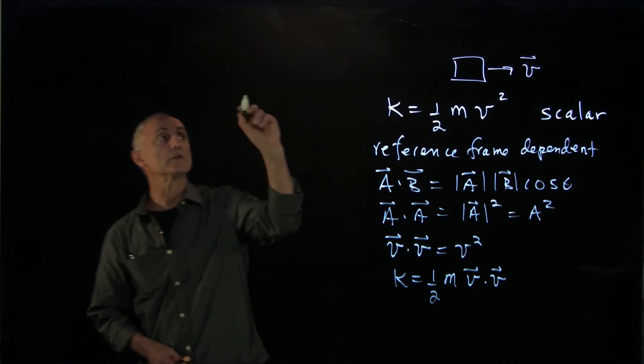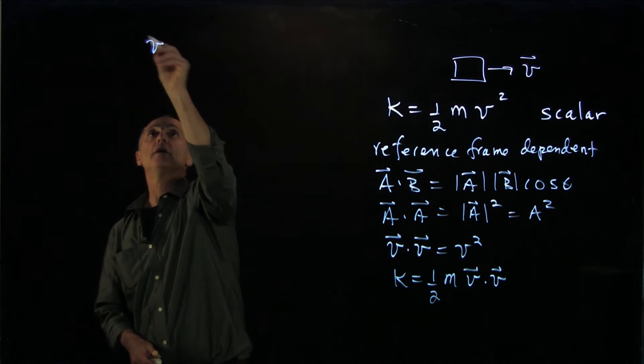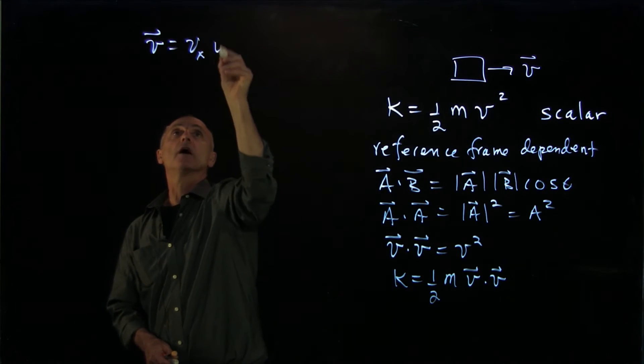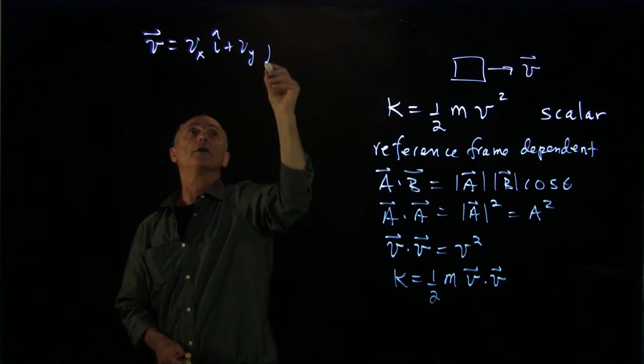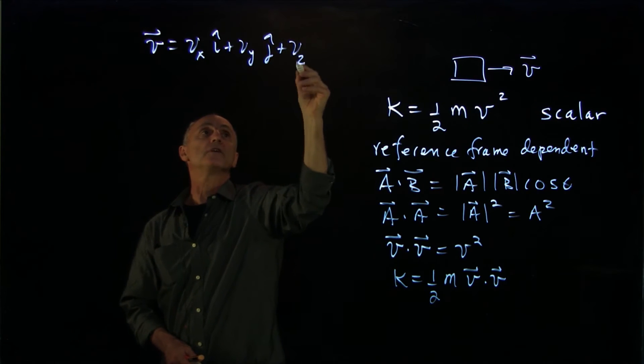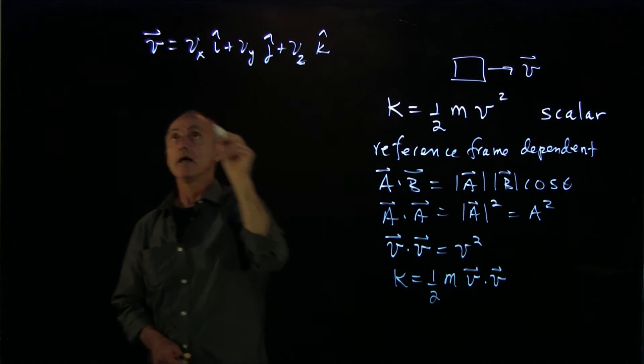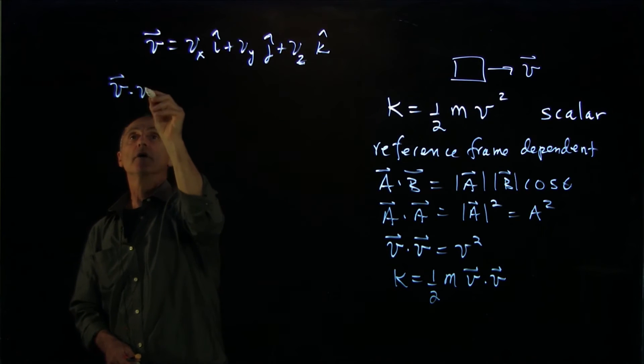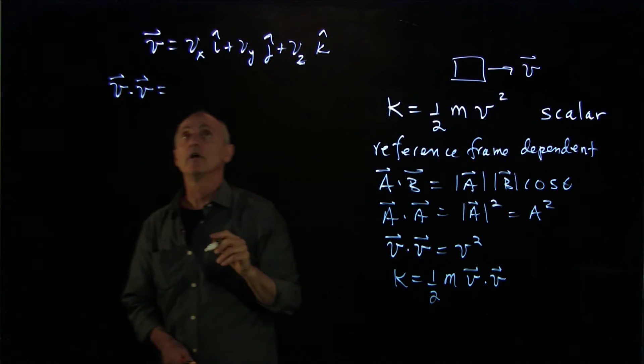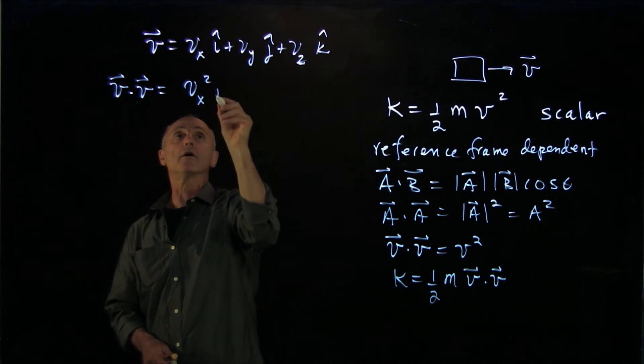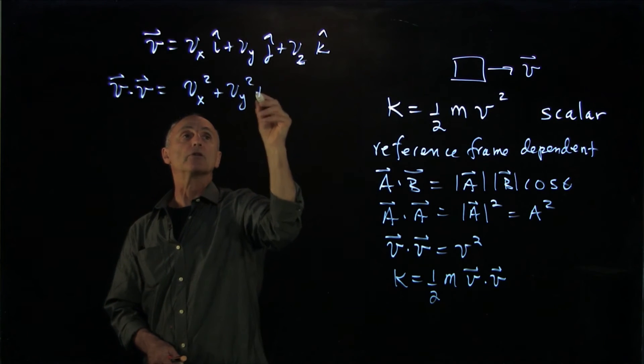Now, if we had a coordinate system where we wrote v as vx i hat plus vy j hat plus vz k hat, and we took the dot product of that vector with itself, then we just know that it's the square of the components.